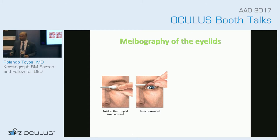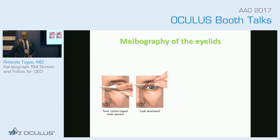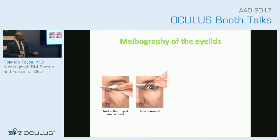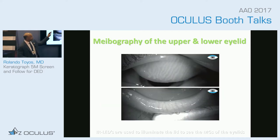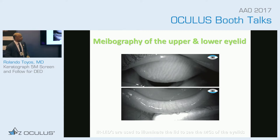The good thing about the Keratograph 5M over other keratographs is that you can get the full breadth of the lid margin. Most keratographs I've seen doing measurements can only get a small portion of the lid margin and meibomian glands. With the Keratograph 5M you can get all the meibomian glands on the upper lid margin and all the meibomian glands on the lower lid margin. You've got a bigger depth of field — that's how they designed the system. Here you can see we're getting the whole lid margin and can get a good idea of how the entire lid margin is doing with their meibomian glands.